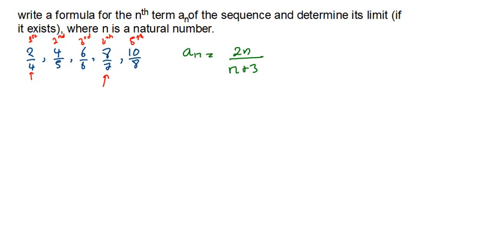So here we're looking for the limit as n approaches infinity. As the sequence is getting bigger and bigger, what is happening? Are we going towards a certain value? Maybe the value is 0? Or are we going towards infinity itself? That's what we want to determine. The limit won't exist if we're not able to determine exactly a constant point — and that's where we talk about whether the sequence diverges or converges.